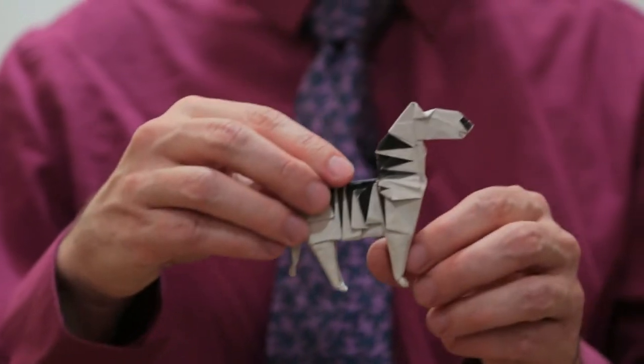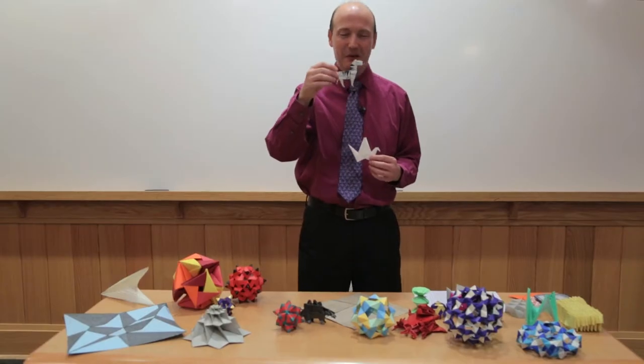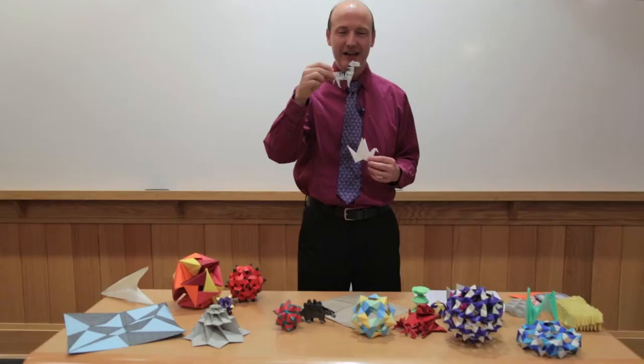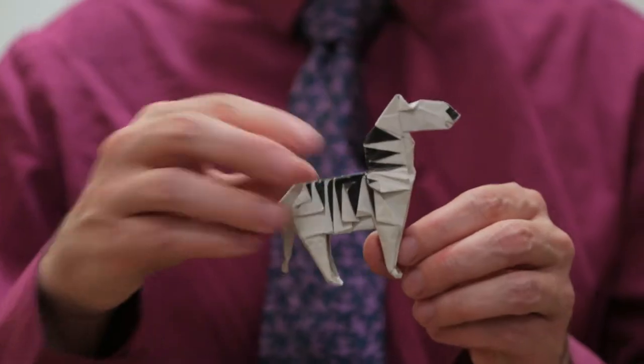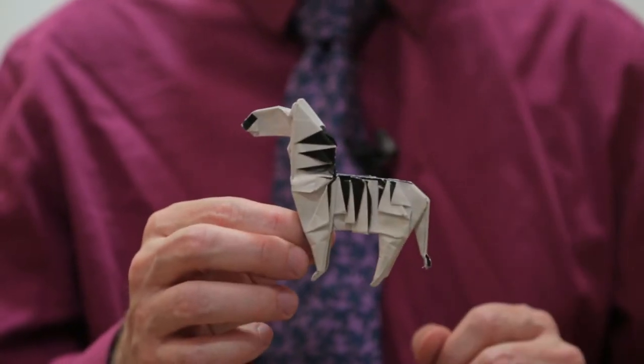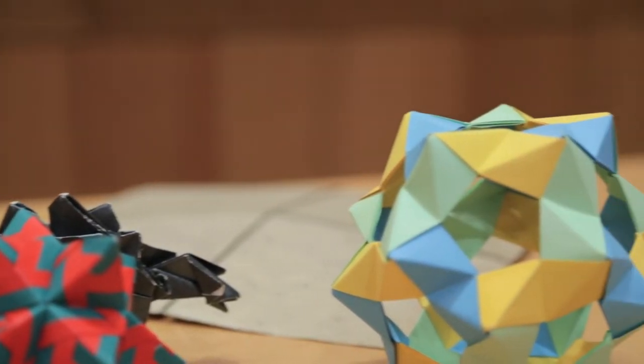And John Montrol has also made an origami zebra. This is a piece of paper that's black on one side and white on the other. And this is folded from a square piece of paper with no cuts at all. It's just cleverly folded so that the black side of the paper makes stripes. It's kind of amazing. And there are other models on the table that I'll talk about.